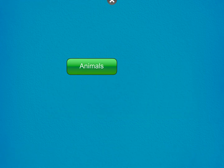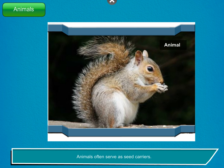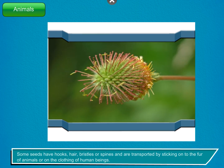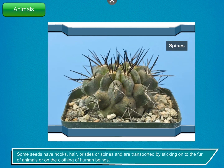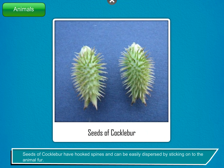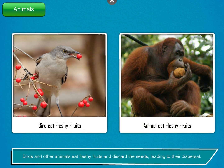Animals. Animals often serve as seed carriers. Some seeds have hooks, hair, bristles or spines and are transported by sticking onto the fur of animals or on the clothing of human beings. Seeds of cockle burr have hooked spines and can be easily dispersed by sticking onto animal fur. Birds and other animals eat fleshy fruits and discard the seeds, leading to their dispersal.